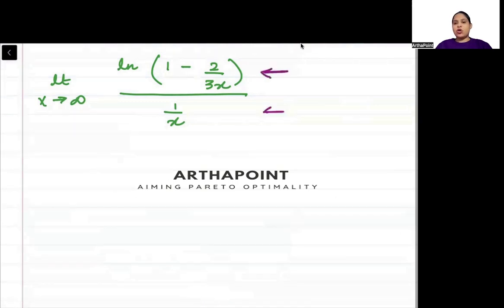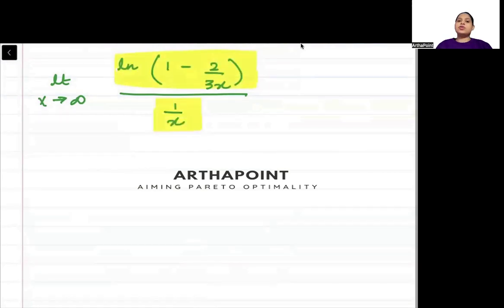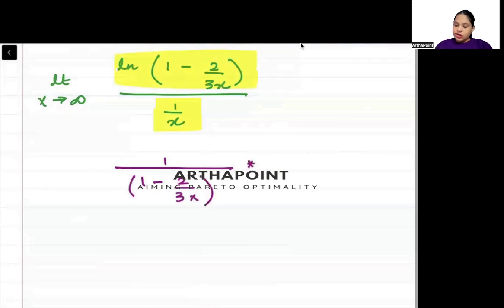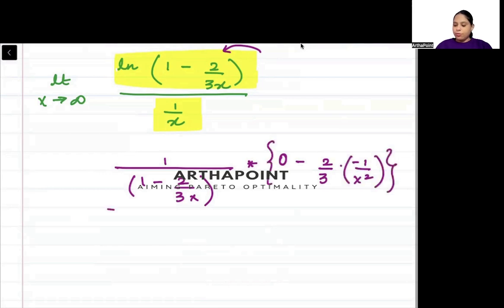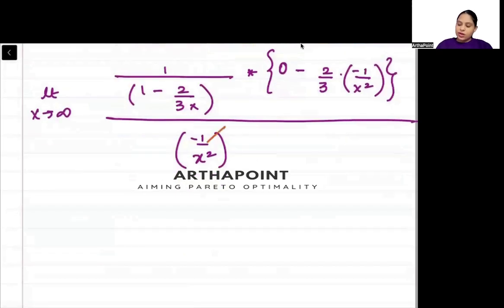L'Hôpital says that if your limit is in 0/0 or ∞/∞ form, you can differentiate the numerator and denominator separately. So differentiate them separately. The numerator: applying chain rule on the log, we get 1/(1 - 2/(3x)) × differentiation of what's inside. The differentiation of 1 is 0 and 2/3 is a constant, so differentiation of 1/x gives -1/x². The denominator's differentiation is also -1/x².